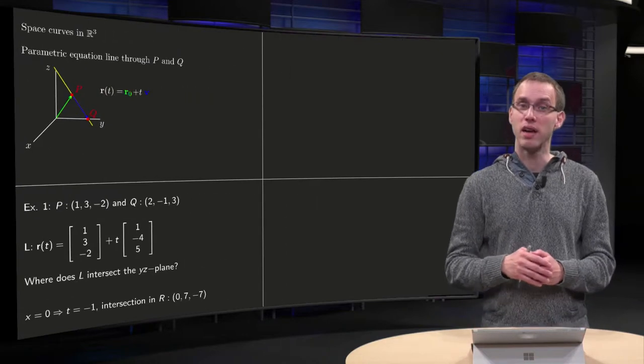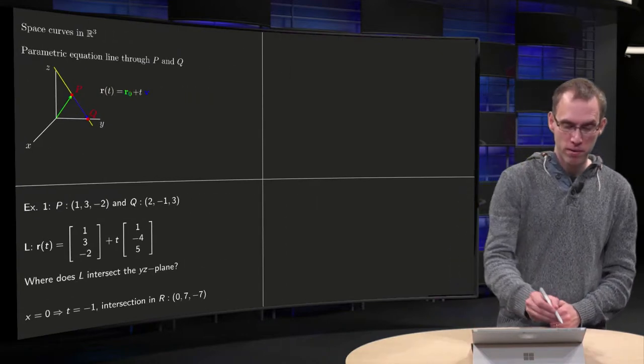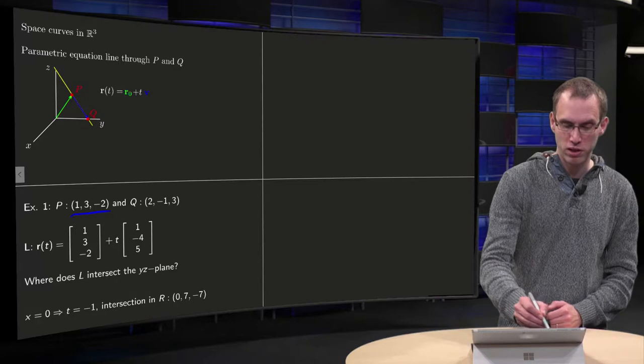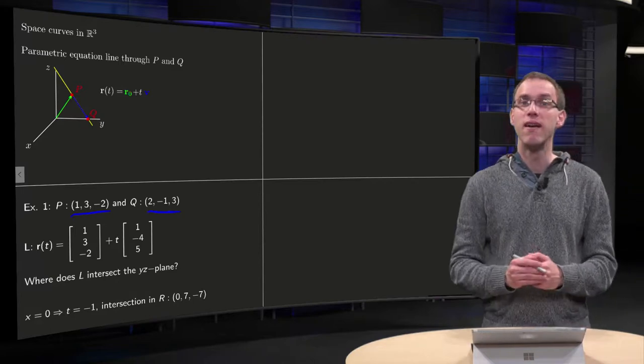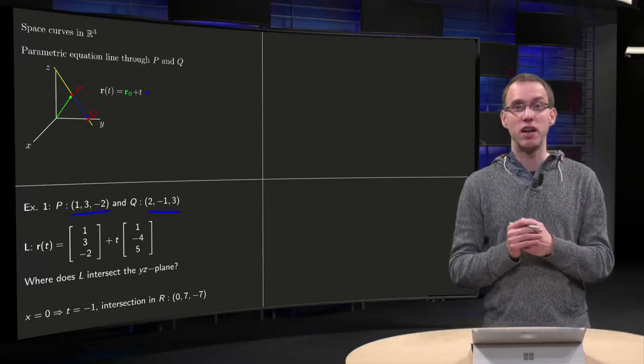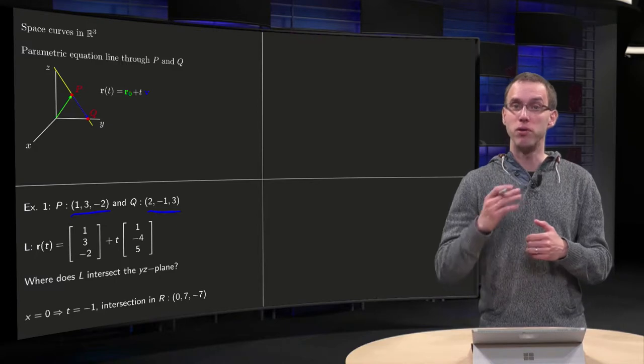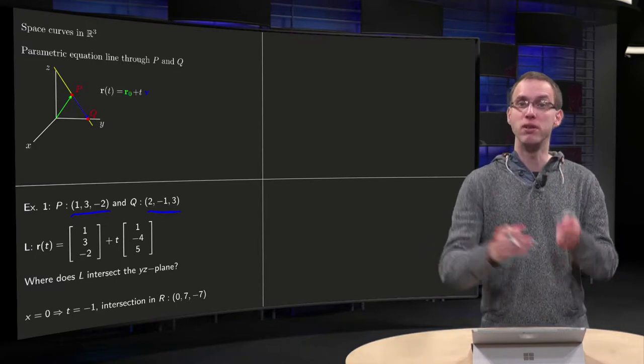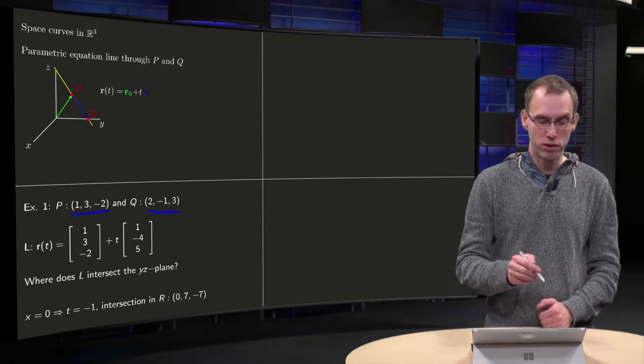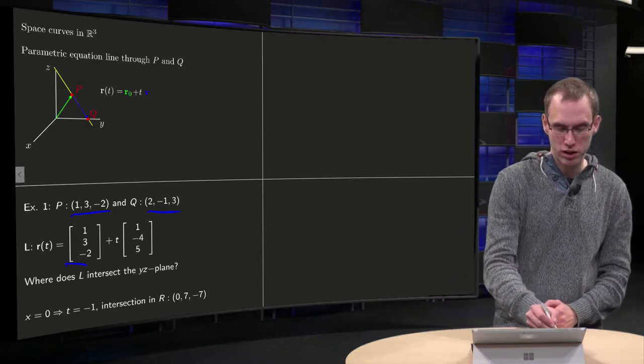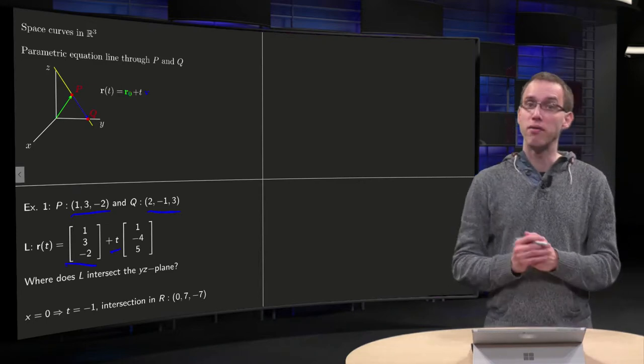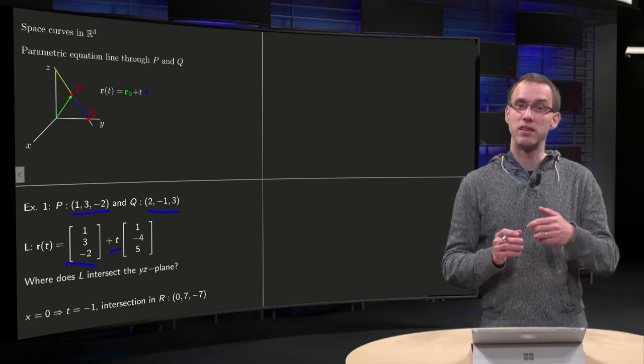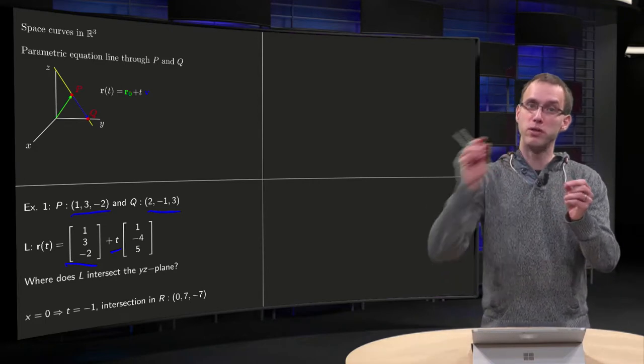So let's take a look at an explicit example where p equals (1, 3, -2) and q equals (2, -1, 3). So what can we take as our r0? Well we can take both the vector from the origin to p or the vector from the origin to q. So we took the first one in this case, so this is our r0 plus t times...